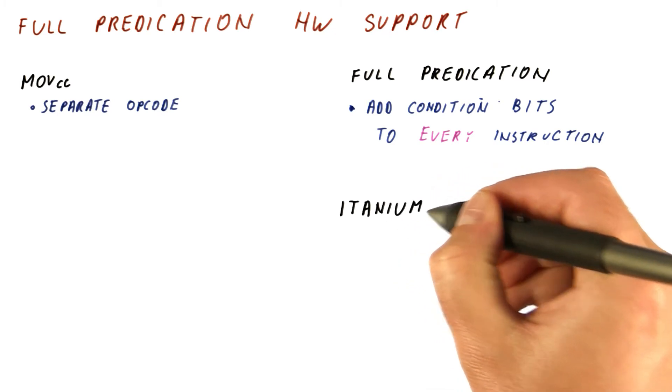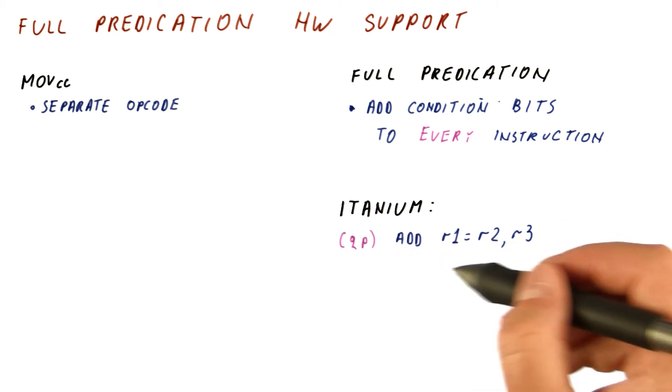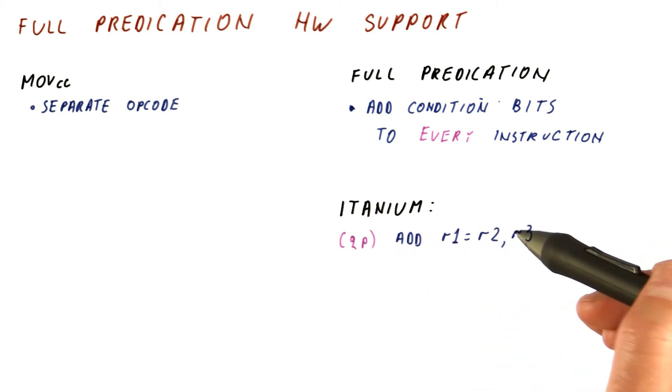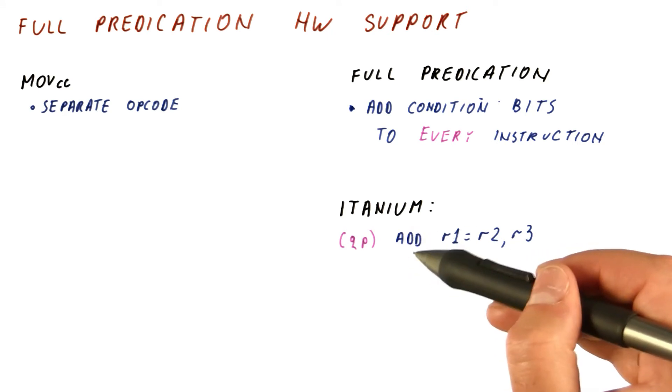For example, the Intel Itanium instruction set has full predication. And this is what an add instruction would look like. It specifies the two source registers, the destination register, that this is an add.